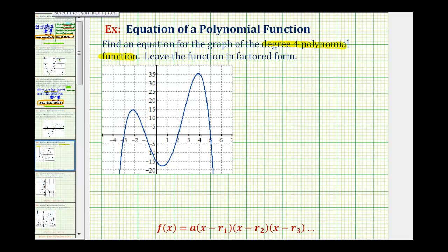Looking at the graph, we can see that all four roots or zeros are rational because this graph has four x-intercepts. The x-intercepts are negative three, negative one, positive two, and positive five. And these are also the roots or zeros of our polynomial function.